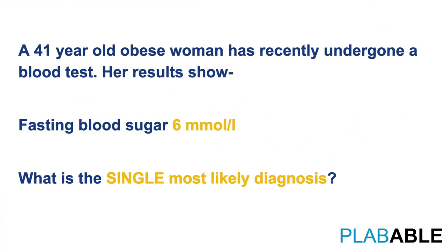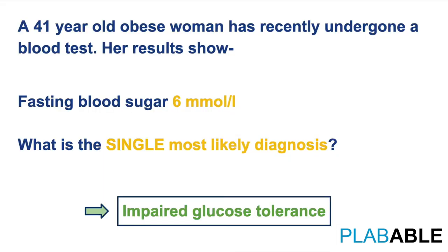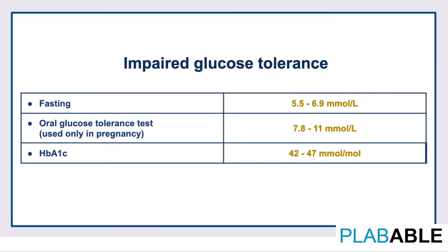Our next case is a 41-year-old obese woman with a fasting blood sugar of 6 mmol per litre. The diagnosis is impaired glucose tolerance. A patient is said to have impaired glucose tolerance if fasting blood sugar levels are between 5.5 to 6.9 mmol per litre, or if levels two hours after an oral glucose tolerance test are between 7.8 to 11 mmol per litre, or if HbA1c is between 42 to 47 mmol per mole.